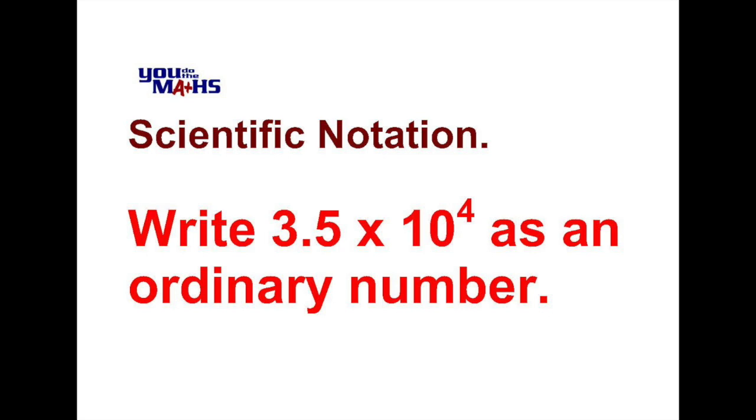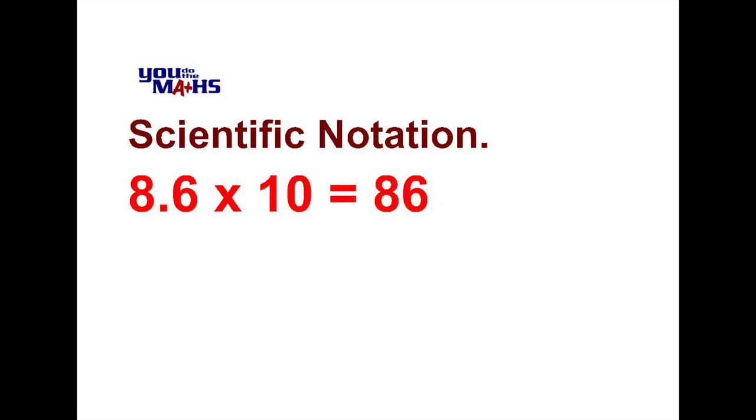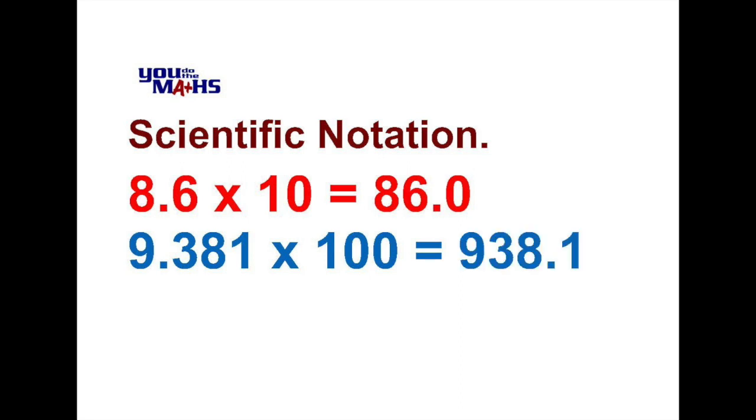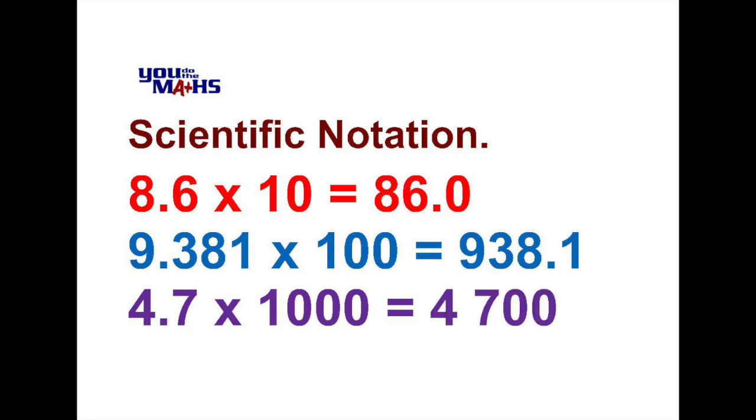Before we do this let's have a look at some other multiplications involving powers of 10. We've got 8.6 multiplied by 10 which comes to 86. We'll also express that with a decimal point so we can see a pattern occurring later on, so 86 becomes 86.0. 9.381 multiplied by 100 is 938.1 and 4.7 multiplied by 1000 is 4700. Again we'll put the decimal point at the end so we can establish a pattern with respect to the multiplication of powers of 10.